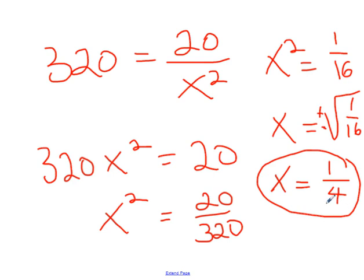To check: if x is 1 over 4, then x squared is 1 over 16. Doing 20 divided by 1 over 16 should give us 320, confirming our answer. So x equals 1 over 4 is correct.